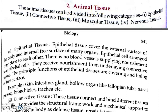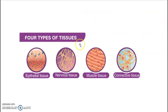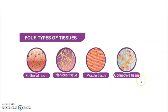Animal tissues are found in animals, while plant tissues are found in plants. Animal tissues can be divided into the following categories: epithelial tissue, connective tissue, muscular tissue, and nervous tissue. Here is the structure of these four types of tissue — you can see how epithelial and nervous tissues are structured.